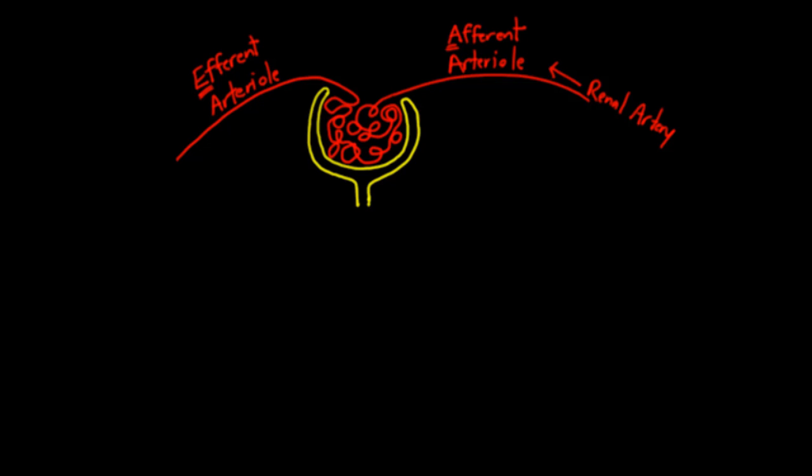So this thing is called the Bowman's capsule. This is the thing in yellow that I've drawn for you. And whenever things are named like this, you've got to wonder who was Mr. Bowman. And Mr. Bowman turns out was from England.